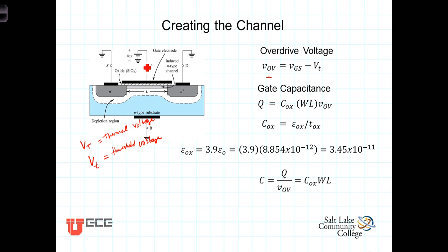As we'll see, the overdrive voltage plays a central role in describing the current-voltage relationship of the transistor. So, one for your notes is then the overdrive voltage VOV is equal to the gate voltage VGS minus that threshold voltage necessary to form the channel.